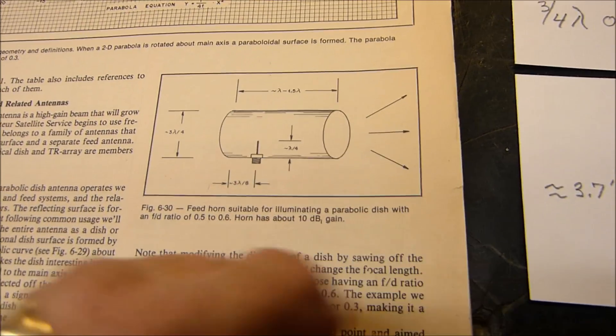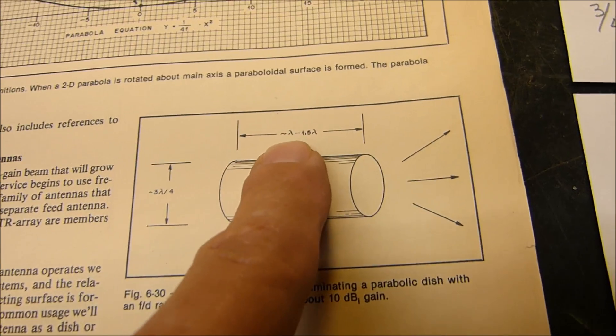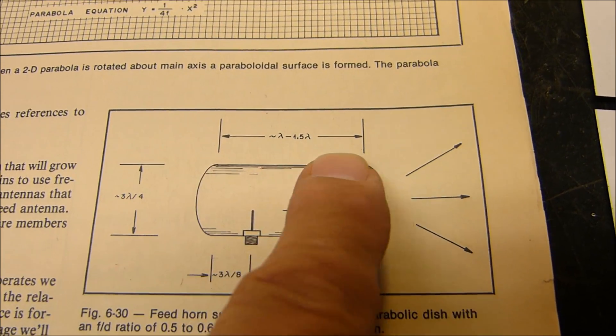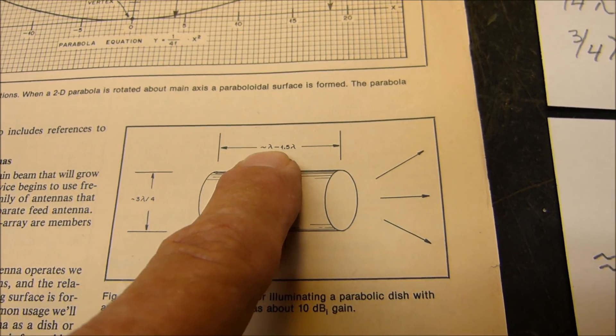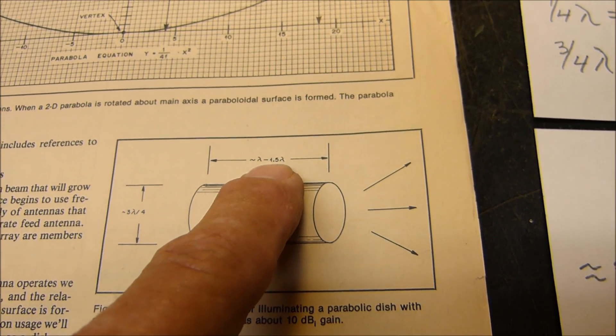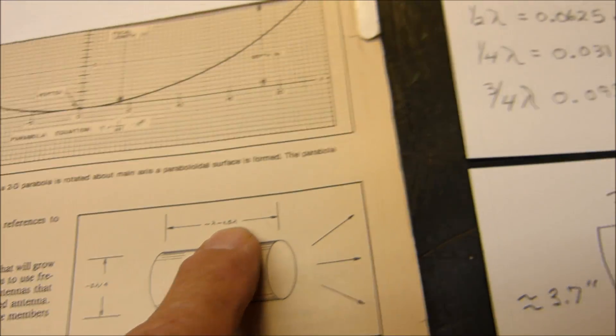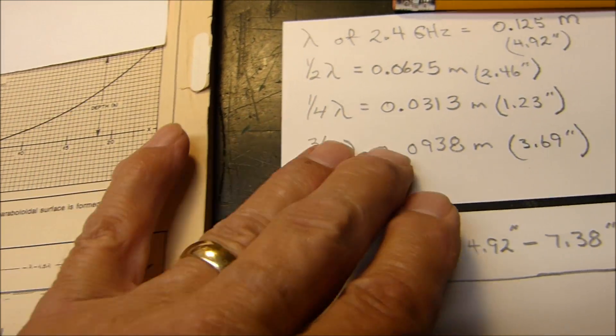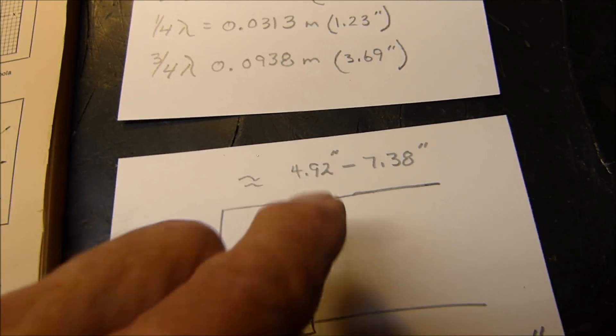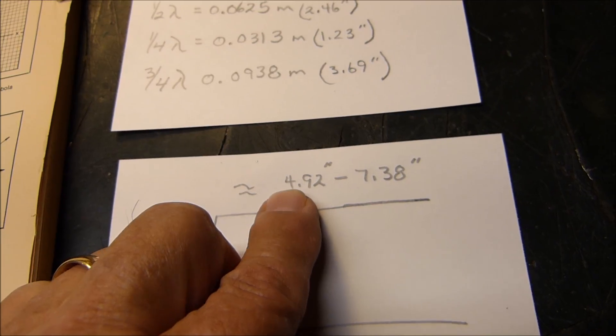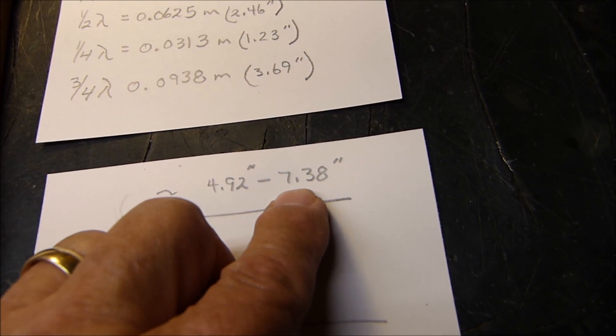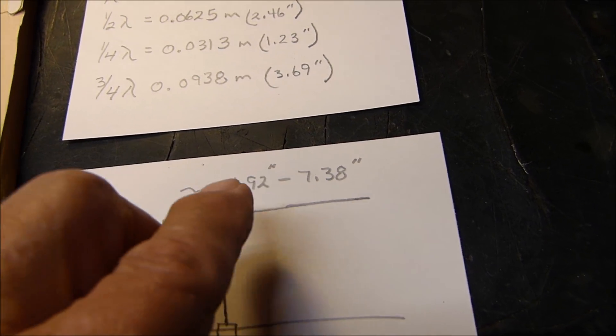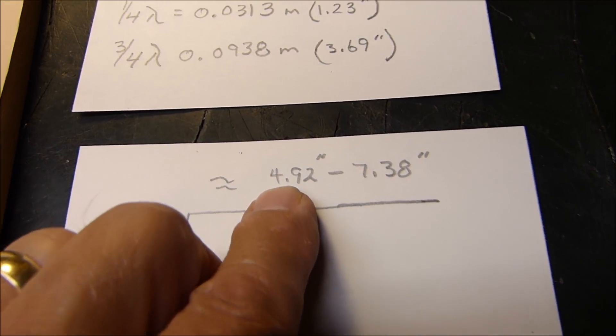He says that this length right here should be approximately a wavelength to 1.5 wavelengths. A wavelength, that would be approximately 4.92 inches, call it 5 inches to 7.38 inches. Ours is 6 inches. So that's good, right?